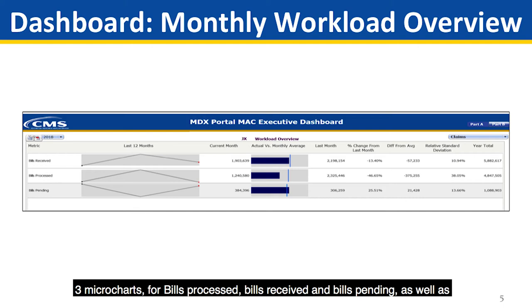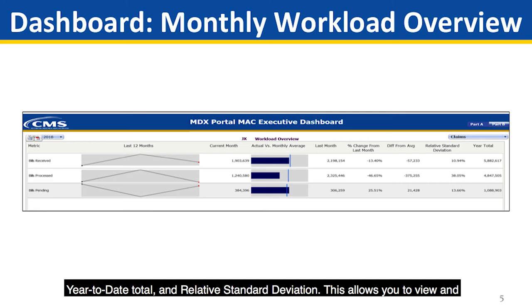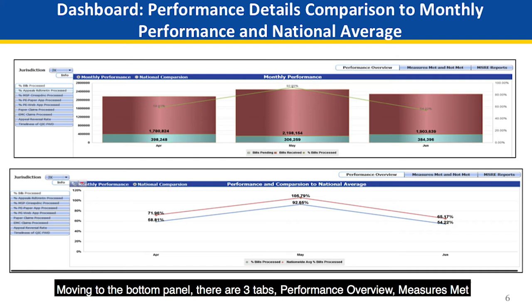The Workload Overview displays three microcharts for bills processed, bills received, and bills pending, as well as the basic summaries for the last 12 months, current month, monthly average, year-to-date total, and relative standard deviation. This allows you to view and compare monthly workload statistics.